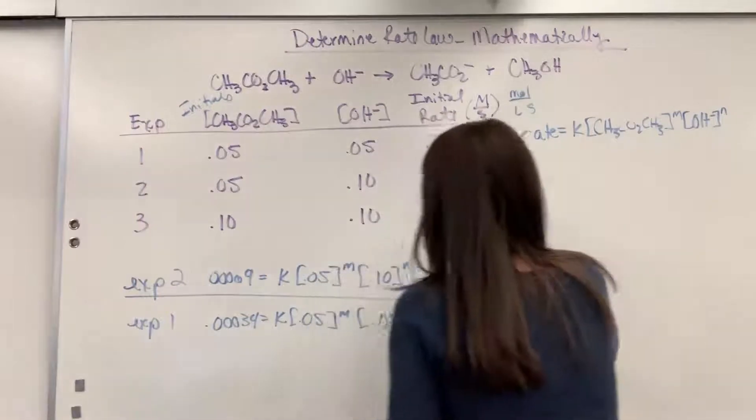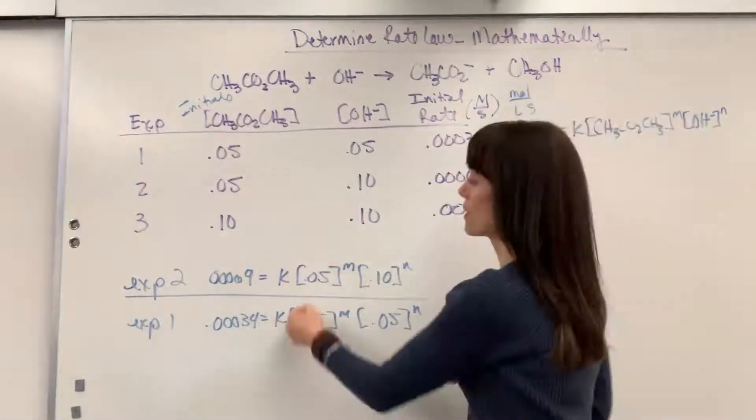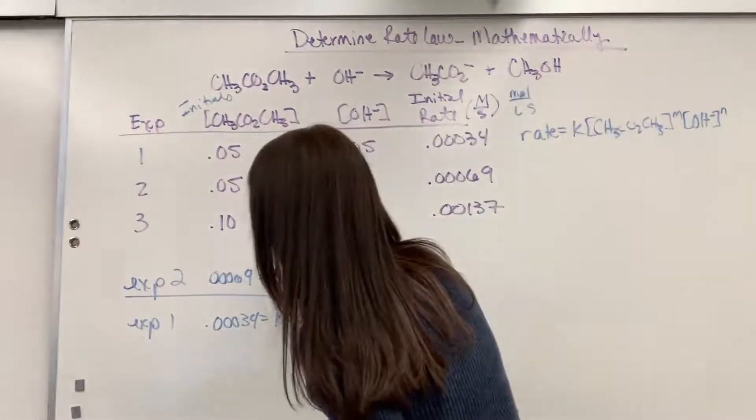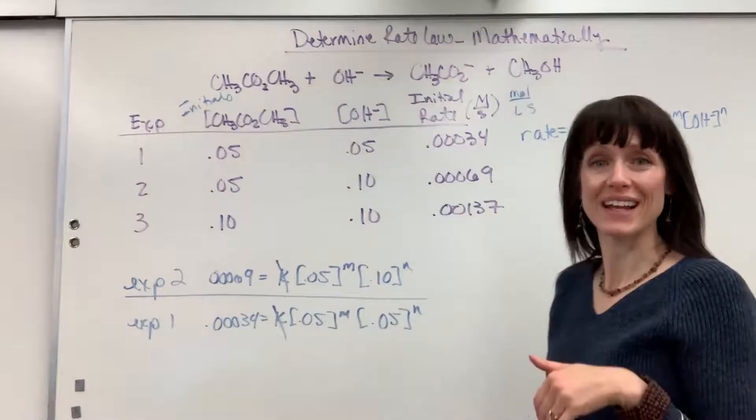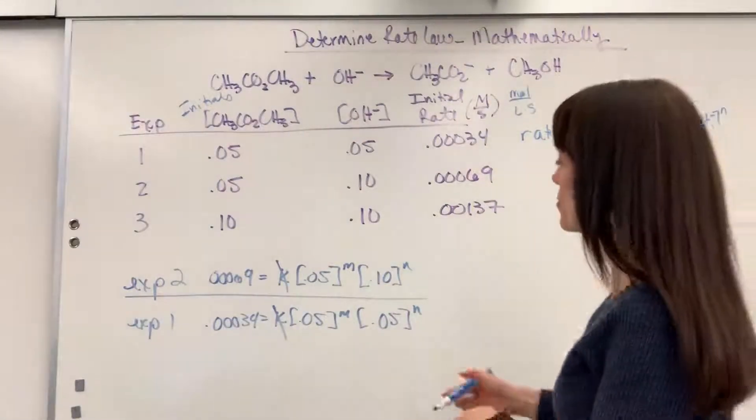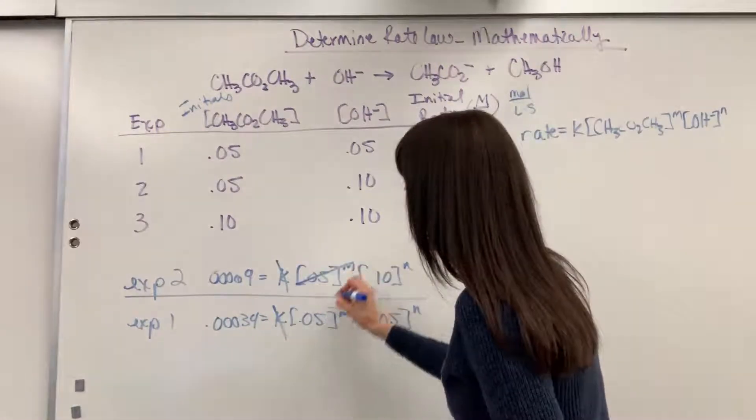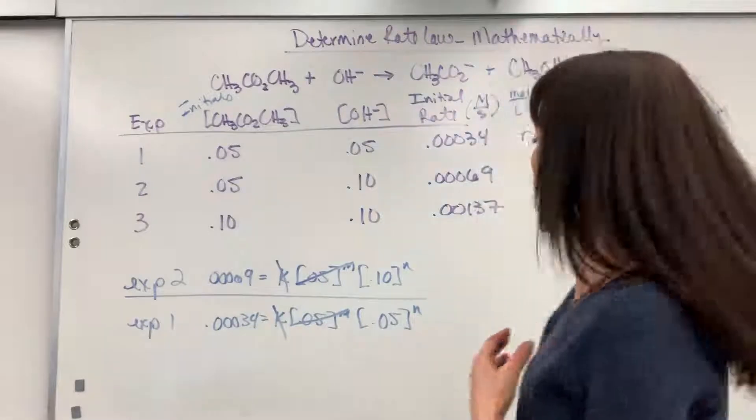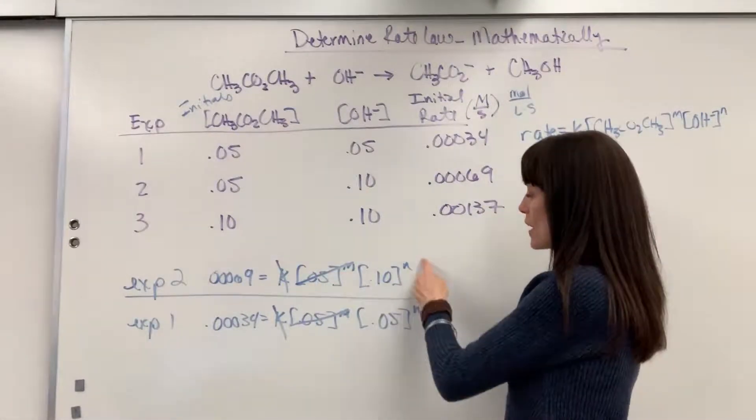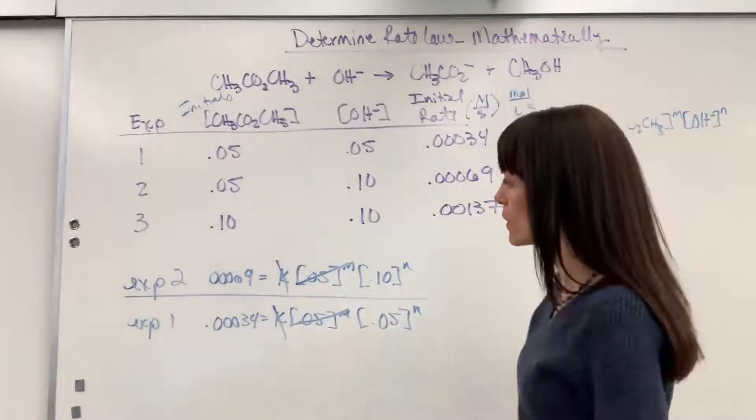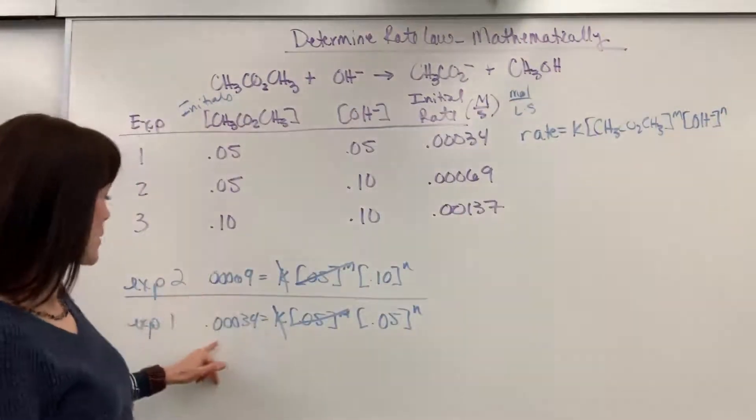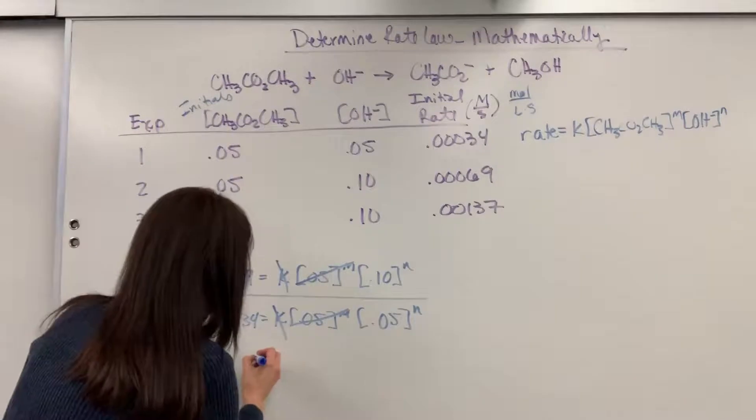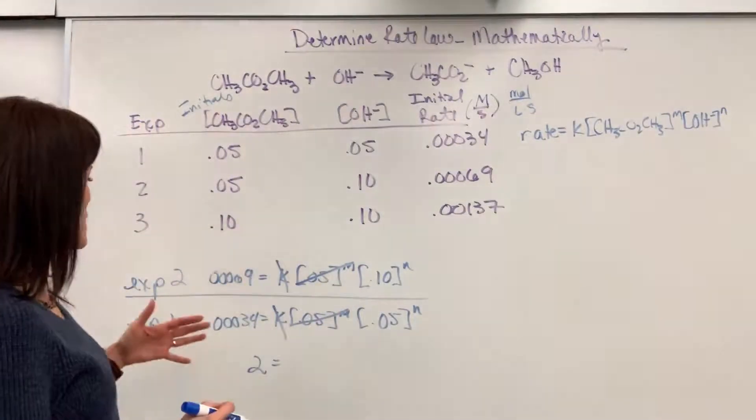Now we can divide. The rate constant will be the same throughout every single trial. So the rate constant, that will cancel. Now I look, is there anything that's identical that I can cancel? I see it right here. .05 raised to the M divided by .05 raised to the M. We were strategic. We did that on purpose. I wanted to cancel one of those exponents so that I'd only have one unknown. So let's go ahead and work this. .0039 divided by .00034 is going to be, what, three? Am I doing that right? No, two, sorry.